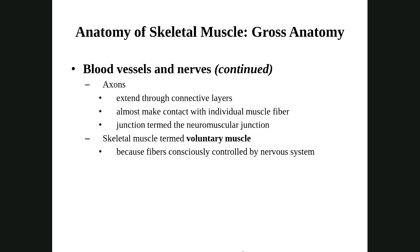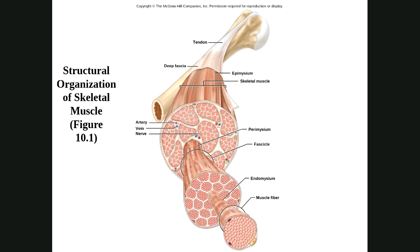Here again is the image showing the different levels of muscle organization: the fascicle and the individual cell or fiber. We also see the endomysium, perimysium, and epimysium. And we can see how when the muscle runs out and finishes, the wrappers merge together and form the tendon that attaches onto the bone.